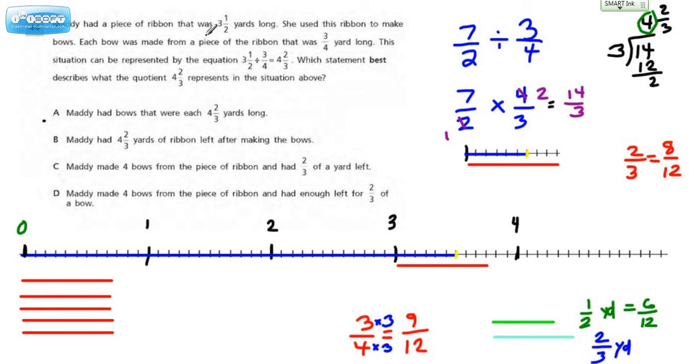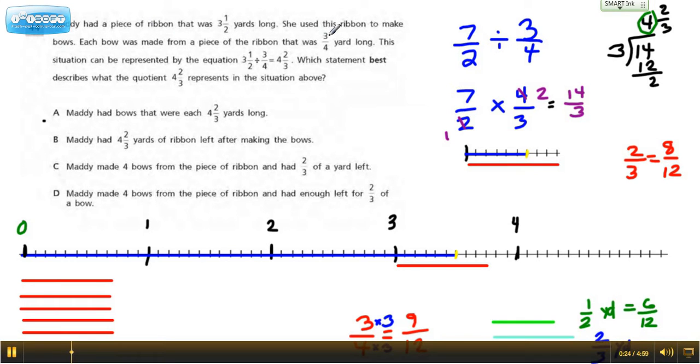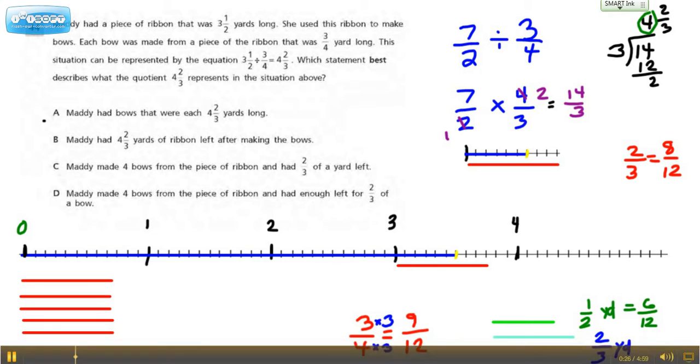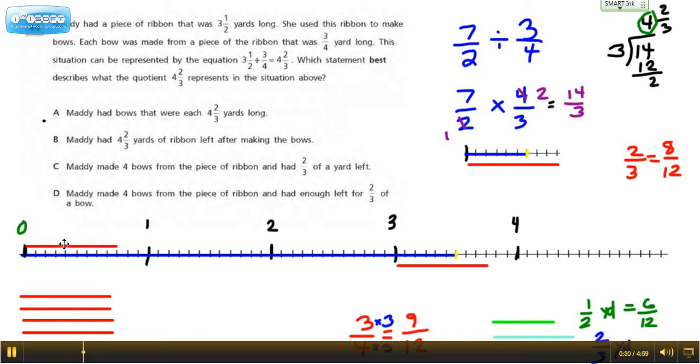Each bow was made from a piece of ribbon that was ¾ yards long. So let's take a look at what that would look like. This is one bow, ¾ of a yard long.